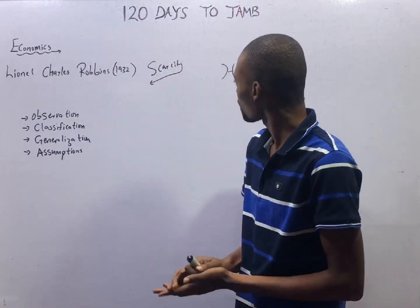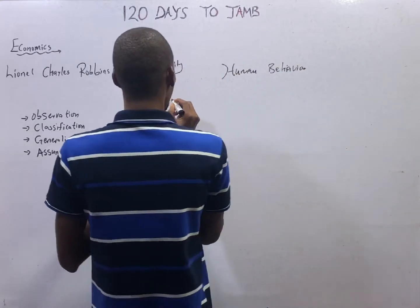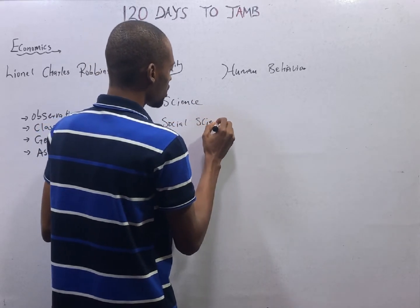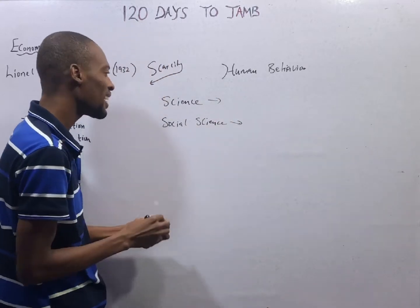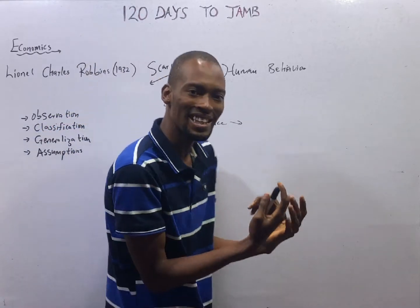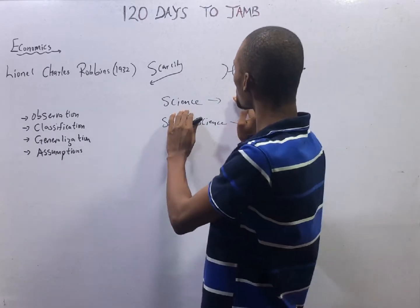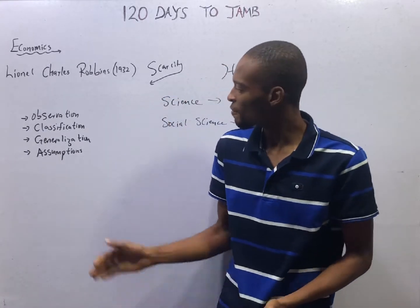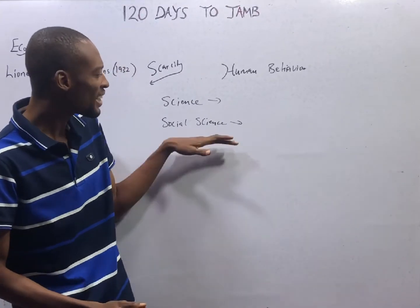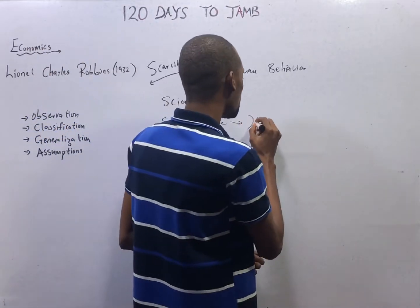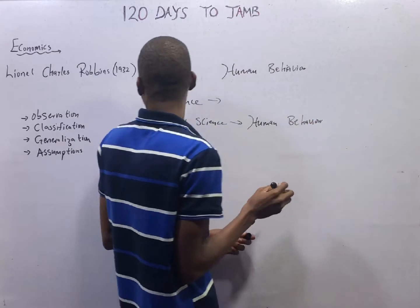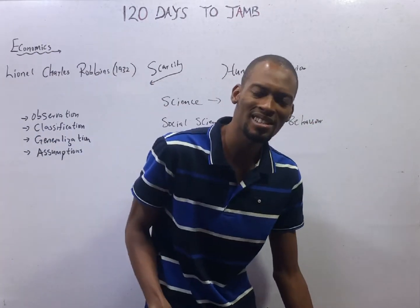Economics can be regarded as both a science and a social science subject. Economics is regarded as a science subject because it makes use of scientific analysis like observation, classification, generalization, and absorption. It is also regarded as a social science subject because it studies human behavior. Since economics studies human behavior, we take a look at it as a social science subject.